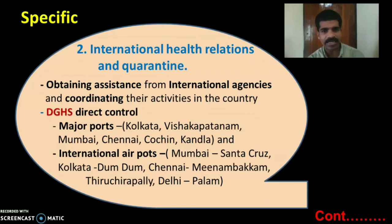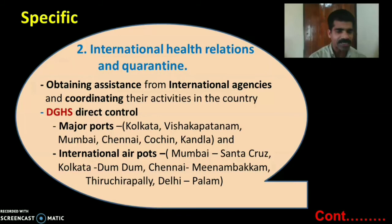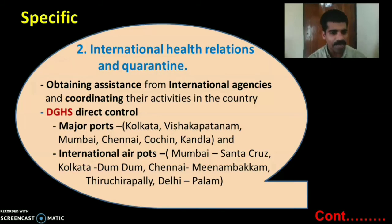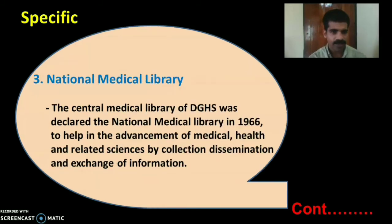Second, International Health Relations and Quarantine: DGHS obtains assistance from various international agencies and coordinates their activities in India. DGHS directly controls major ports like Kolkata, Visakhapatnam, Mumbai, Chennai, Cochin, and Kandla, and international airports such as Mumbai (Santa Cruz), Kolkata (Dum Dum), Chennai (Meenambakkam), Tiruchirappalli, and Delhi (Palam).